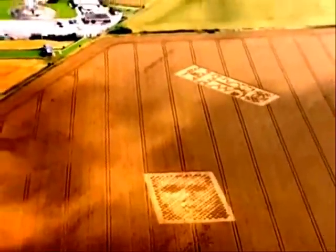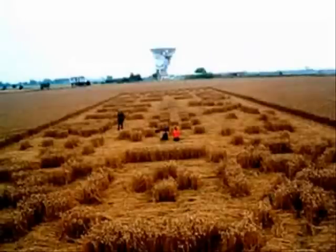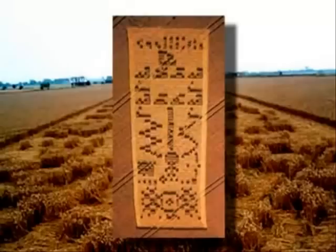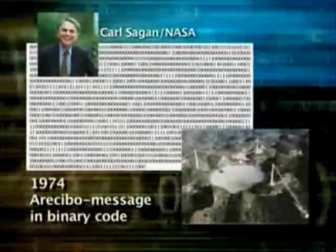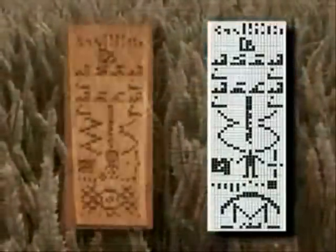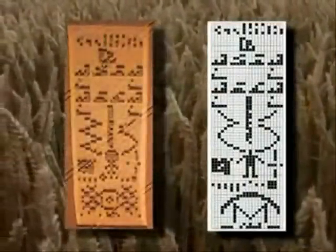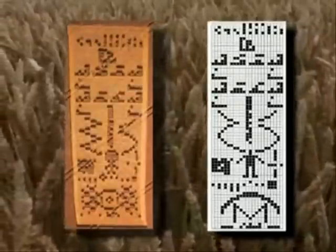Three days later, the face was joined by something that looked like a data strip — rows of counters made out of standing and flattened crop. An astonishing similarity was soon discovered. In 1974, the astronomer Carl Sagan composed a message that NASA sent into space from the Arecibo Telescope in Puerto Rico — binary figures which constituted a graphic code presenting key factors about humans and the planet we live on. 27 years later, an identical pattern appears in a crop field right in front of a similar radio telescope. However, on closer inspection, the code contained some fundamental differences.